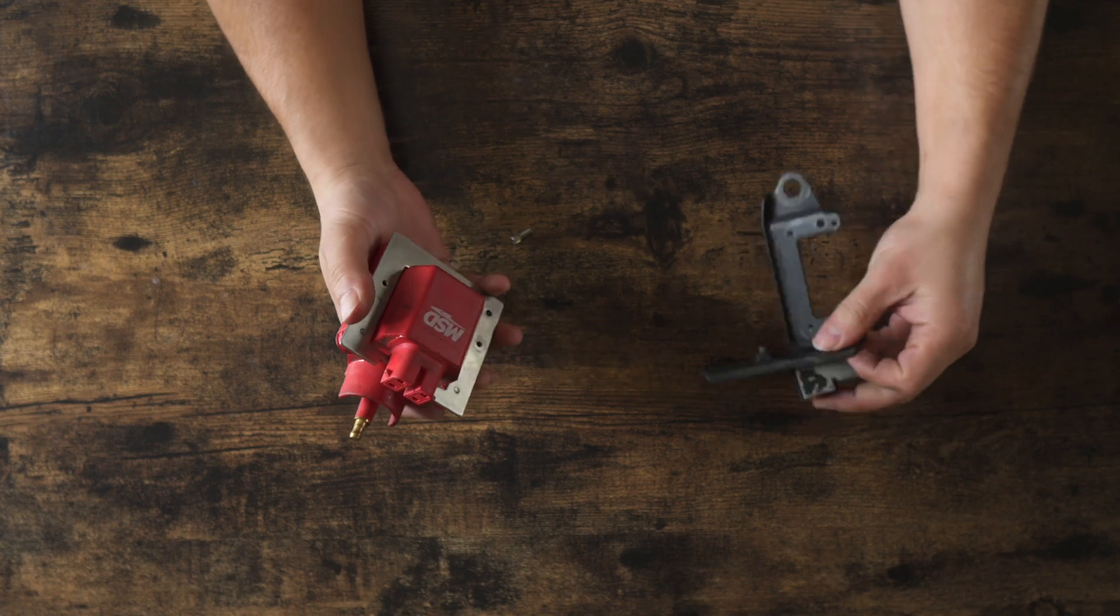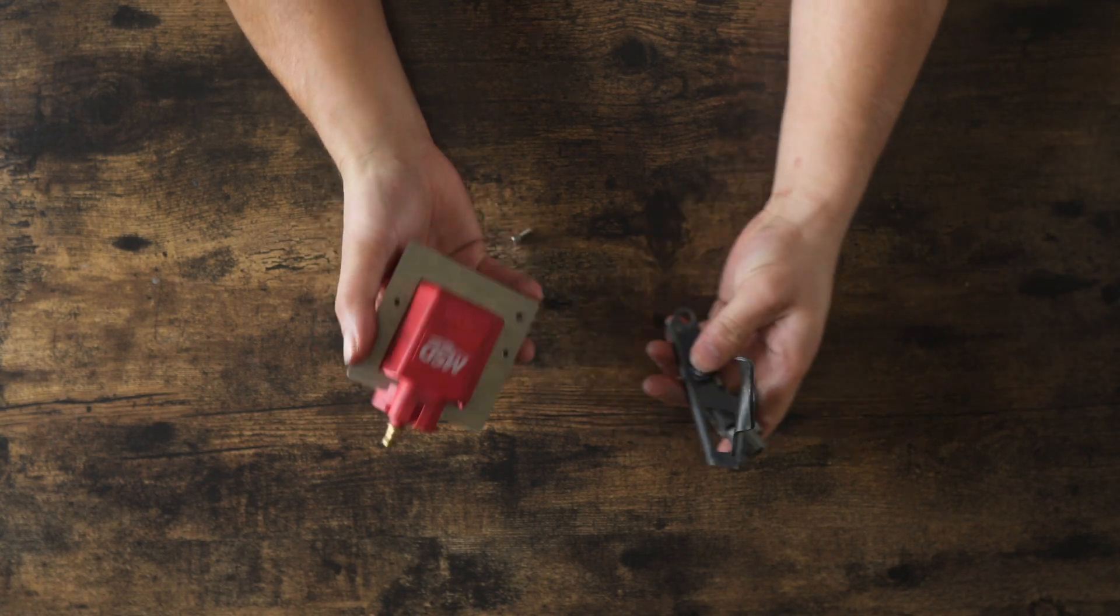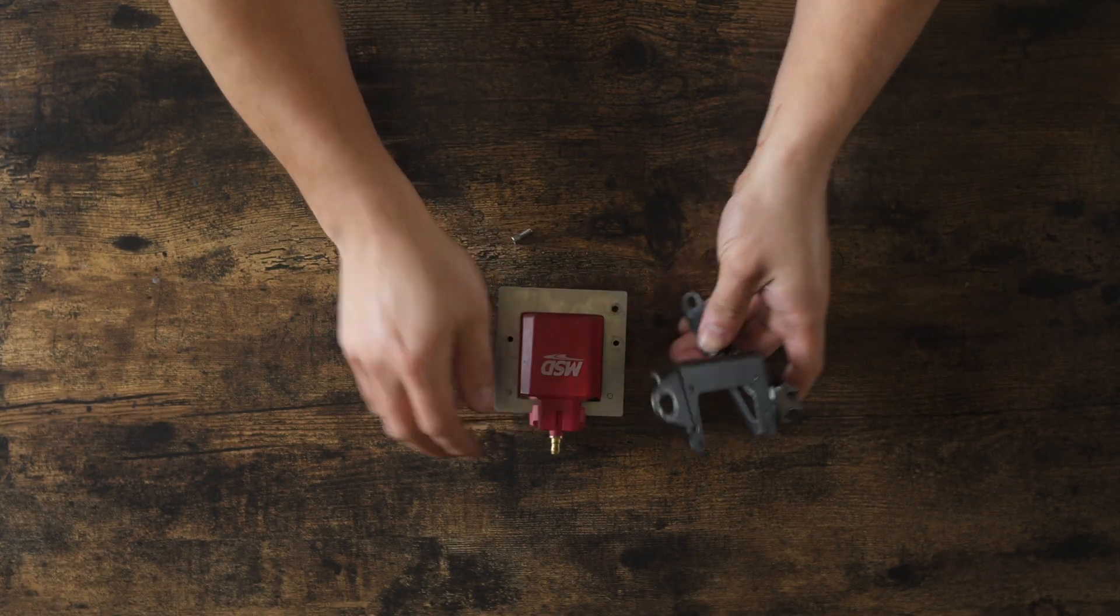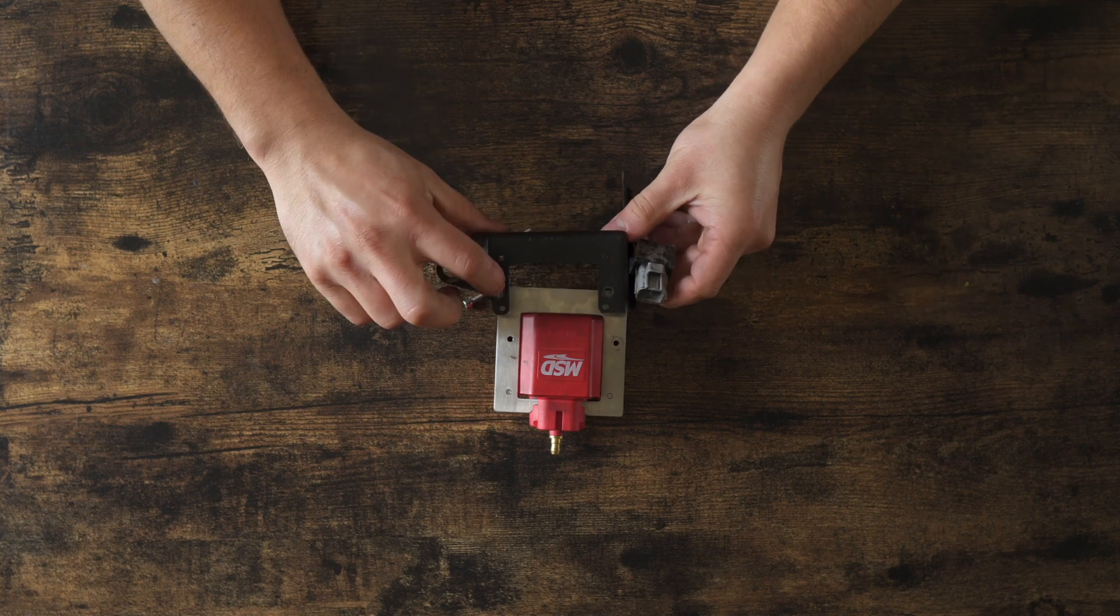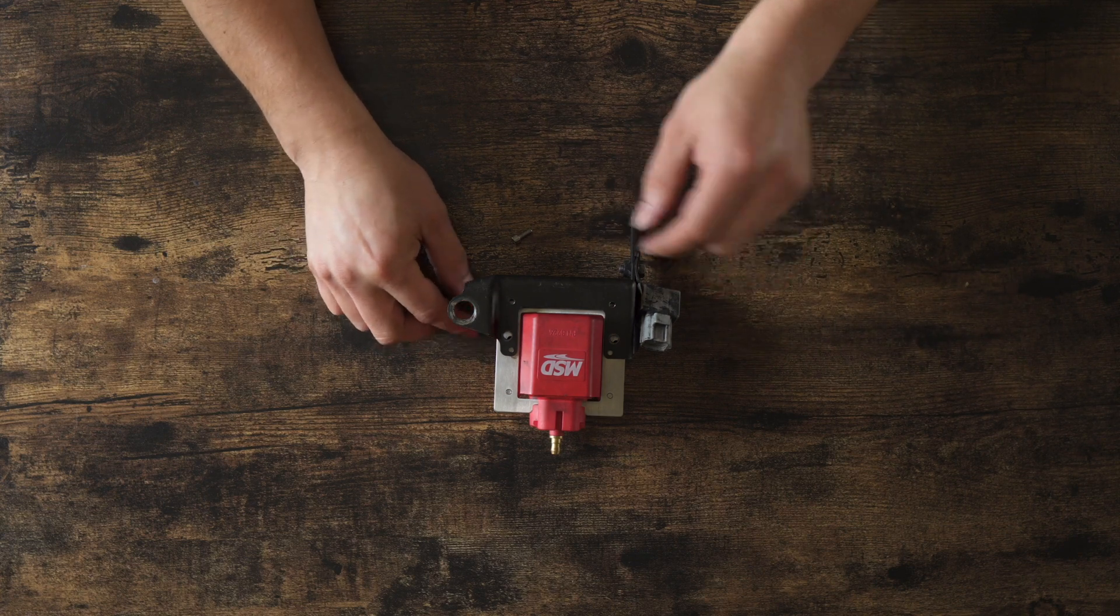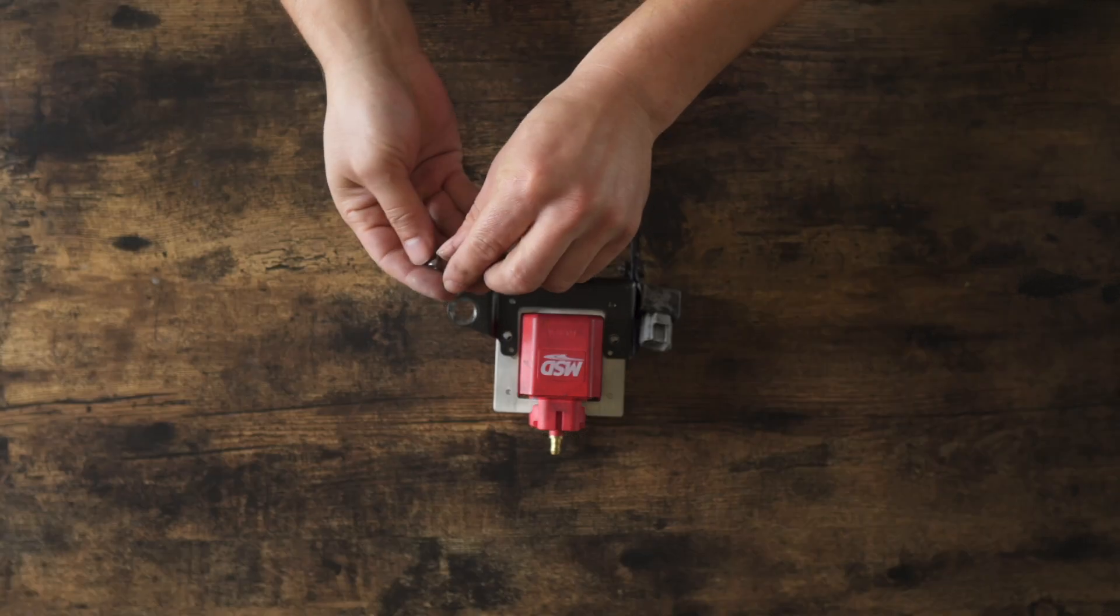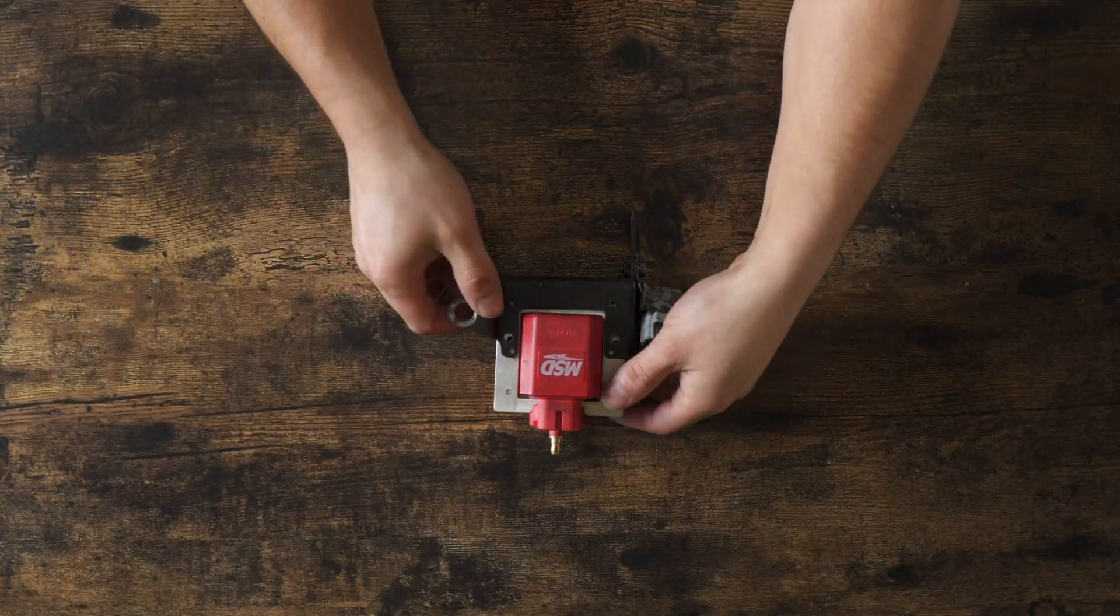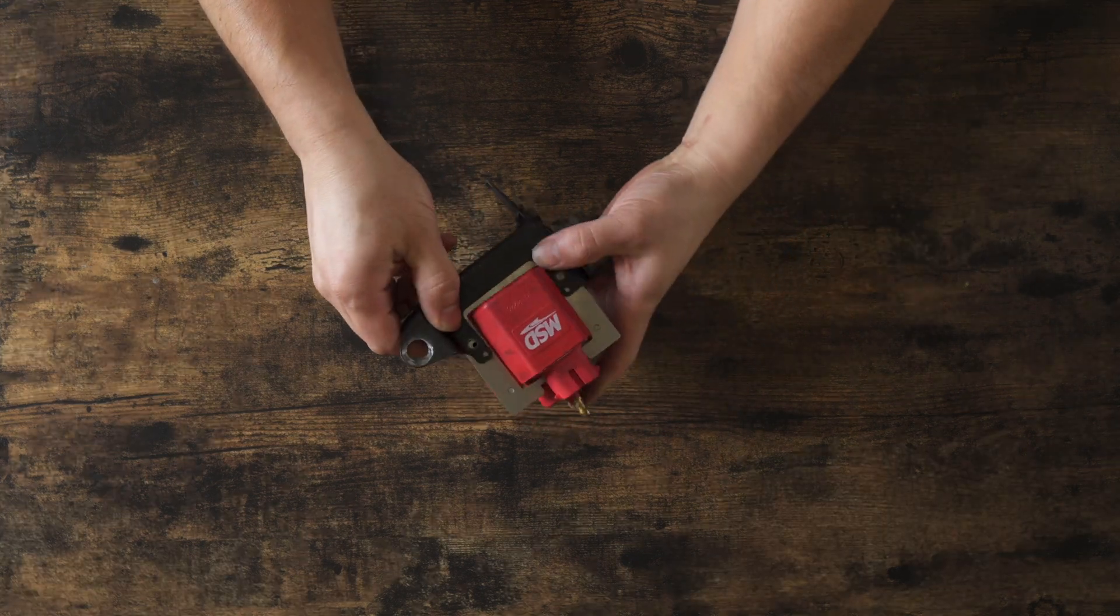And then we are going to actually have the coil like that. And then these holes here do not have threads. And we're going to have bolts that pass through. And you're going to use these smaller bolts to attach it to the adapter plate.